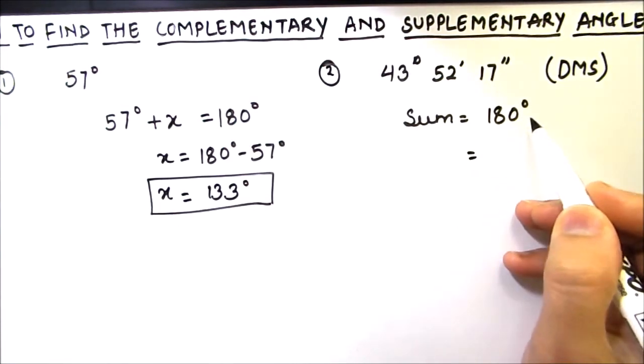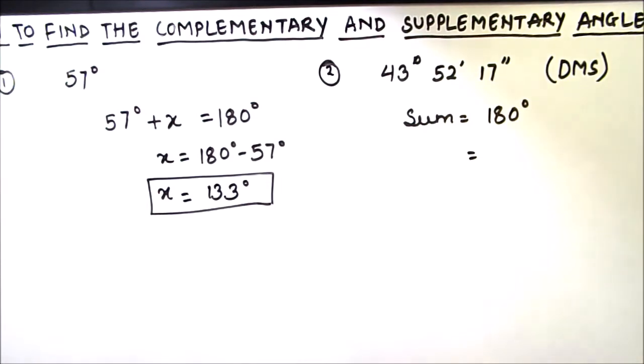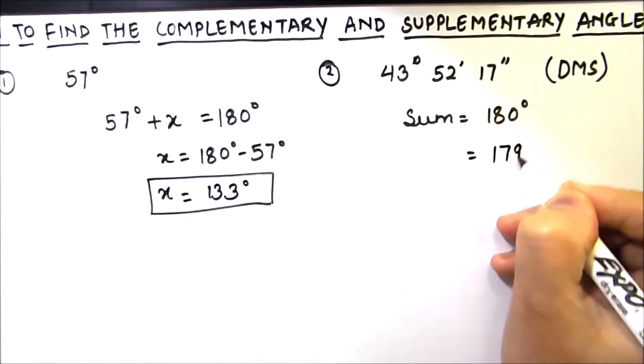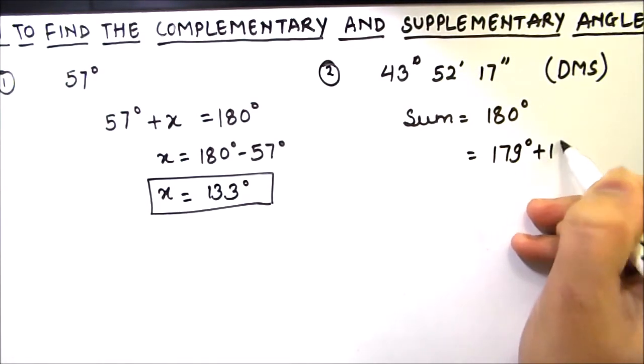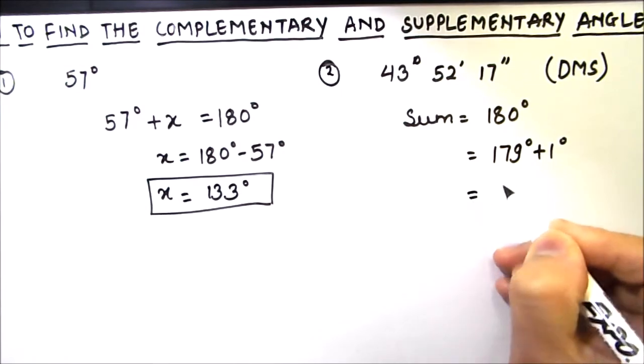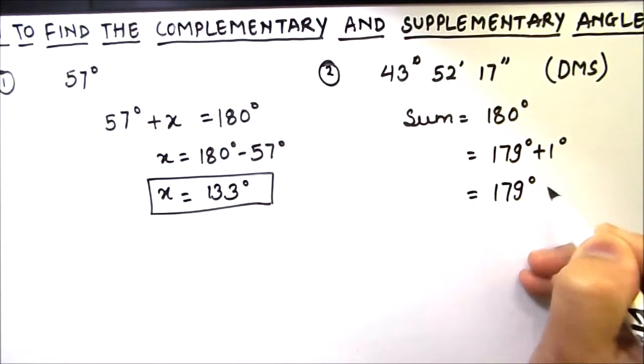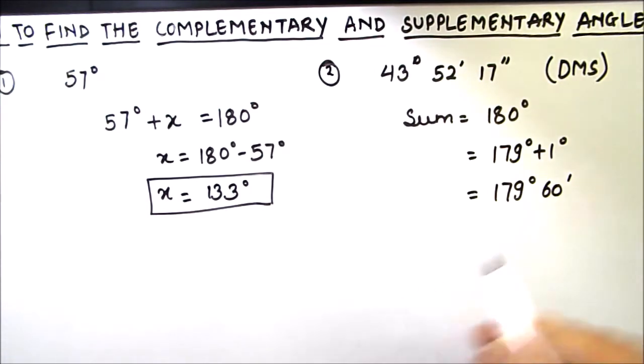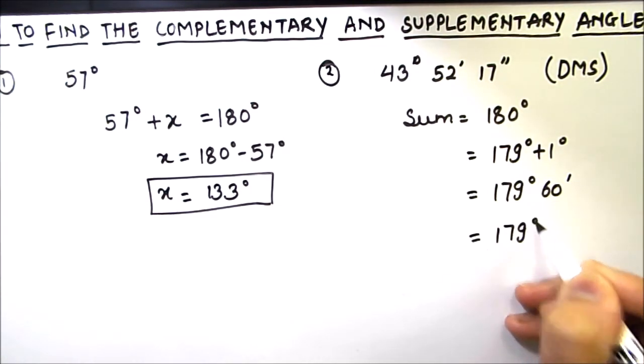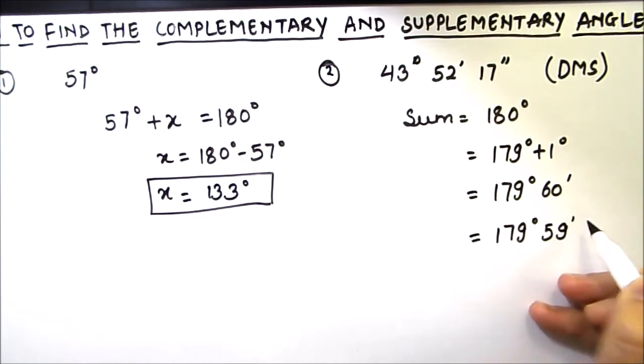180 degrees can be written as 179 degrees plus 1 degree, and 1 degree can be written as 60 minutes. And then we can write these minutes as 59 minutes and 60 seconds. These all values are equal to 180 degrees. This is the DMS form we are going to use to find out the supplementary angle when it is given in DMS form.